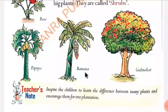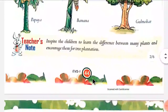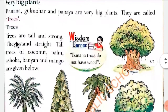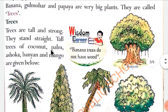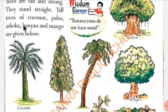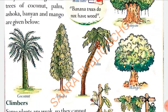Aur baki papaya, banana, gulmohar — yeh trees hain kyunki trees bade podhe hote hai. Banana, gulmohar and papaya are very big plants, they are called trees. Trees are tall and strong. Tall trees of coconut, palm, ashoka, banyan and mango are examples. I like mango very much — do you like mango? Mango tree bhi ek baar dekh karke zaroor aao.